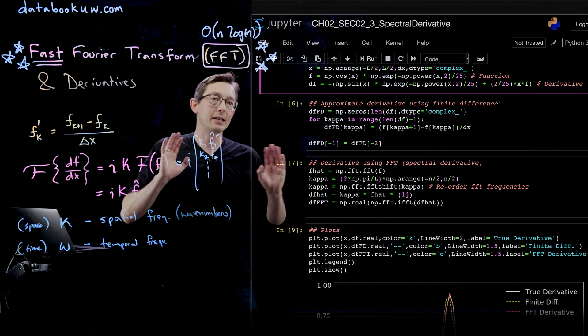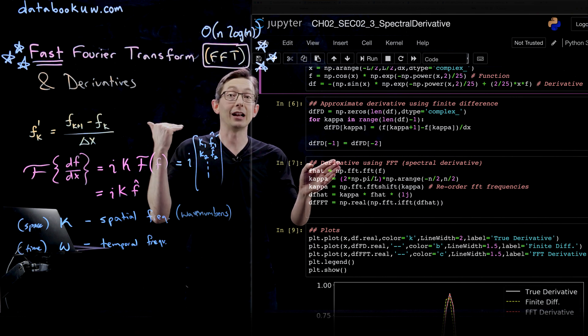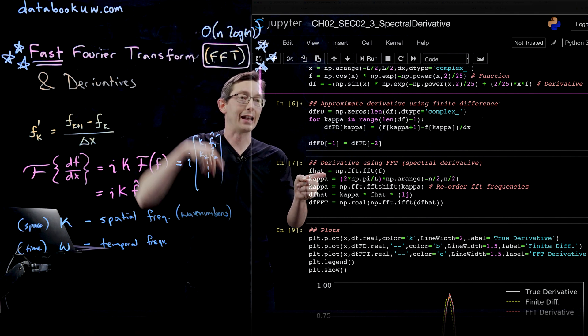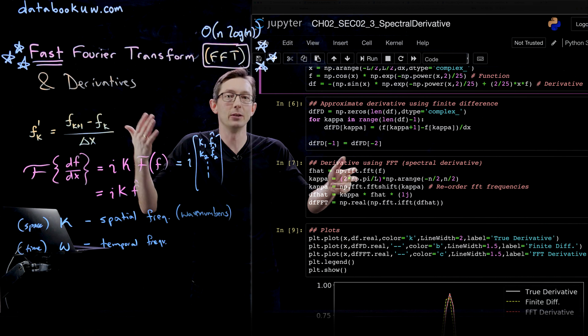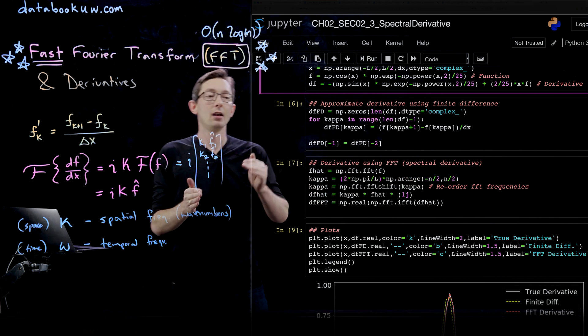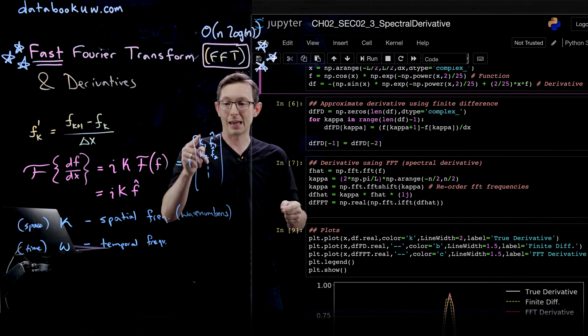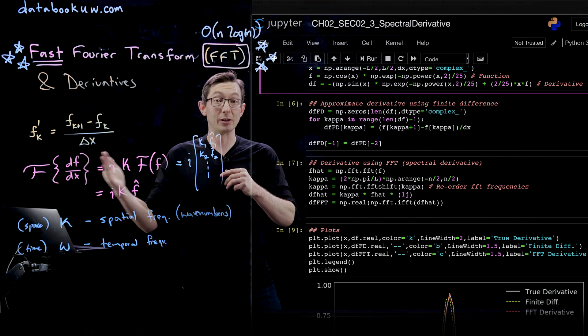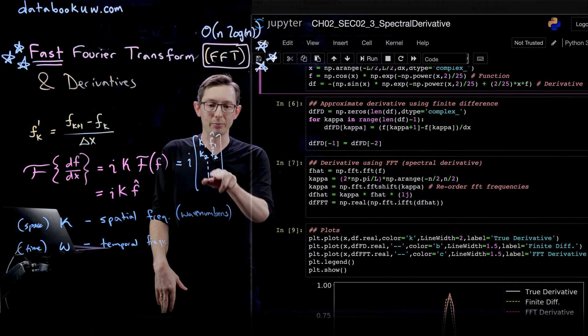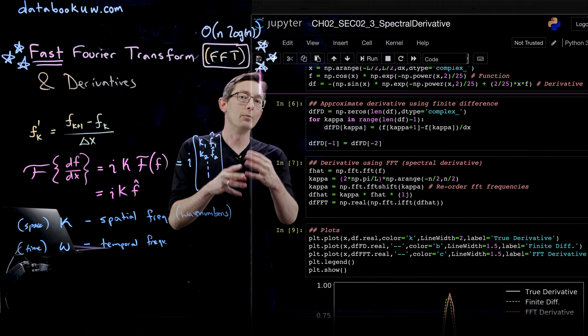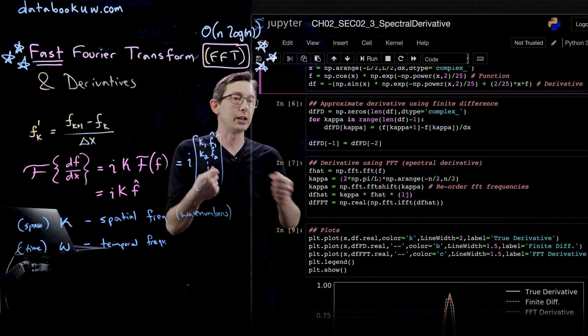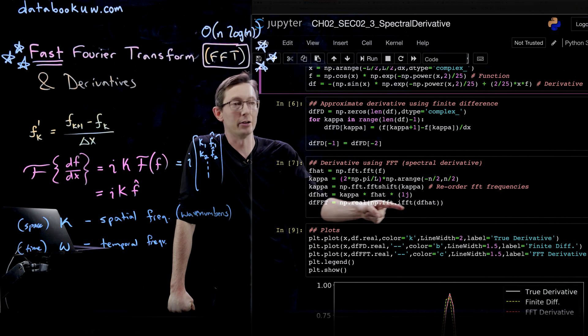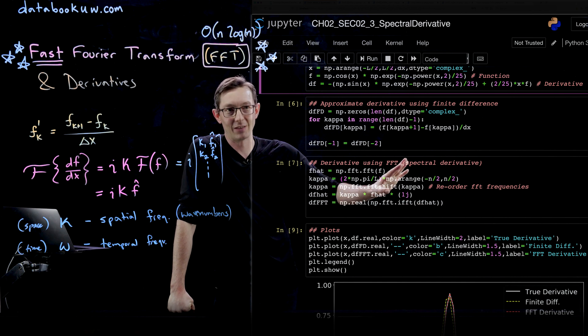The upshot is that all of these steps are very fast and very accurate. The fft I can rapidly compute, it's order n log n. I can create this kappa vector, no problem. Then you compute your derivative, i times kappa times f, and inverse Fourier transform to get the derivative back in spatial units. Because these are complex numbers in f-hat, when you multiply these out and inverse Fourier transform, you might have very small machine precision imaginary parts. We're just going to take the real part of this inverse Fourier transform. That's just being careful.